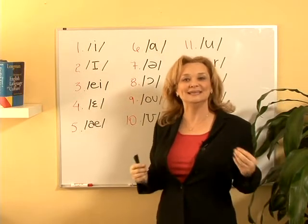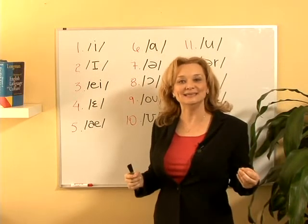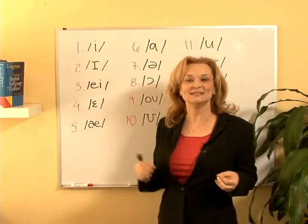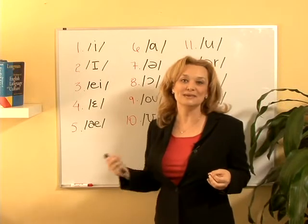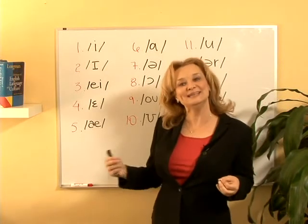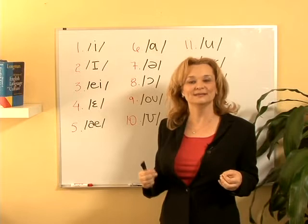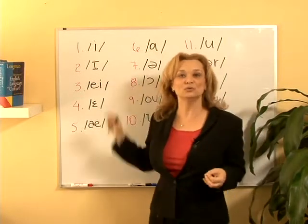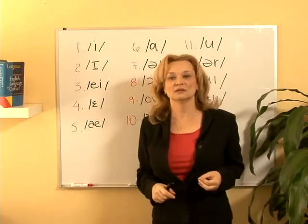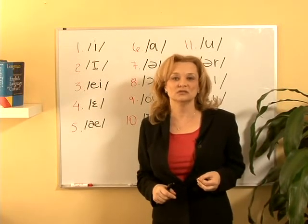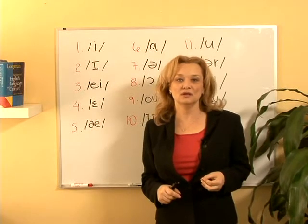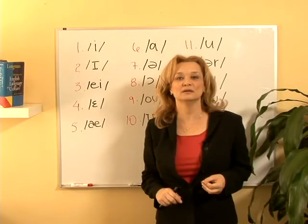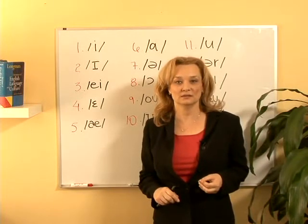Some common words include please, see, meet, believe. Say it one more time with me: ee. Vowel number two is 'it'. This sound appears in words like difficult, if, dinner. Say it with me: it.